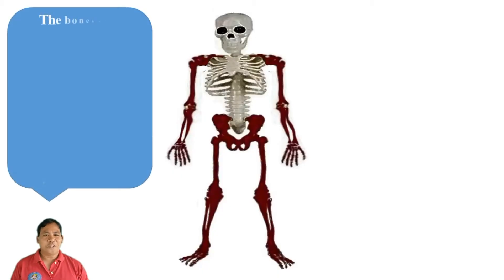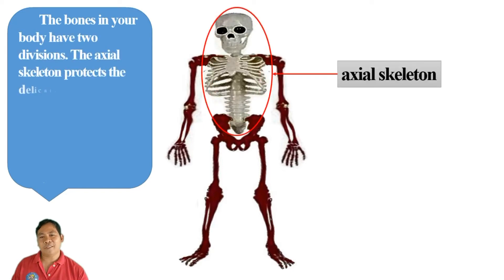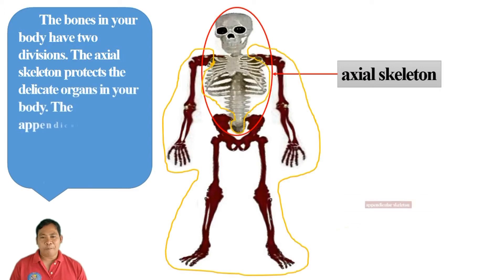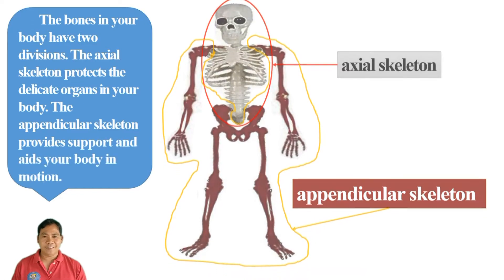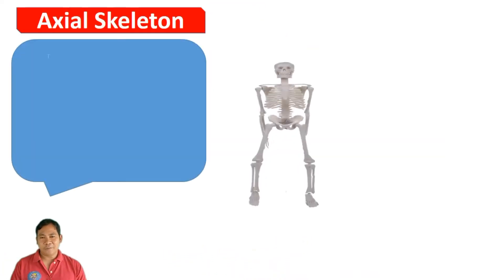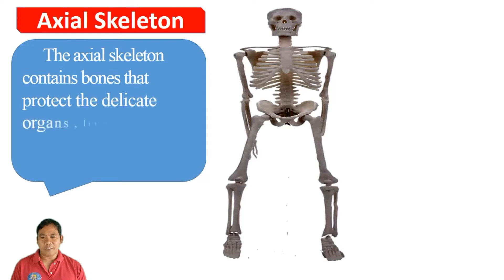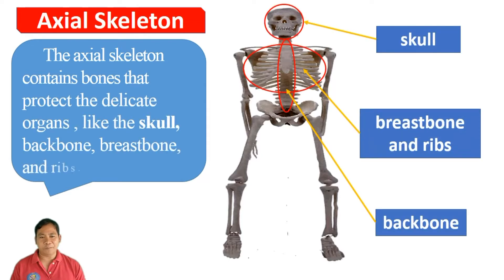The bones in your body have two divisions. The axial skeleton protects the delicate organs in your body. The appendicular skeleton provides support and aids your body in motion. The axial skeleton contains bones that protect delicate organs, including the skull, backbone, breastbone, and ribs.